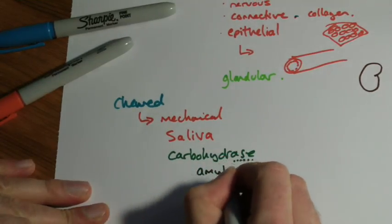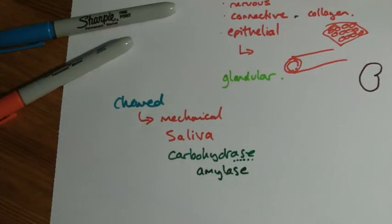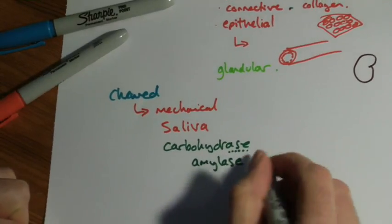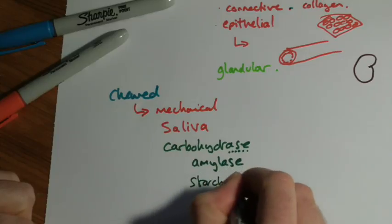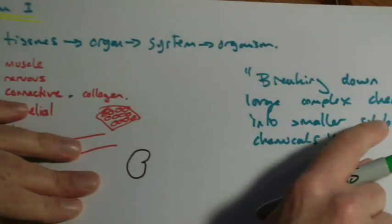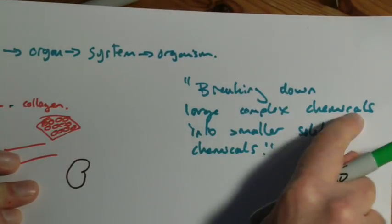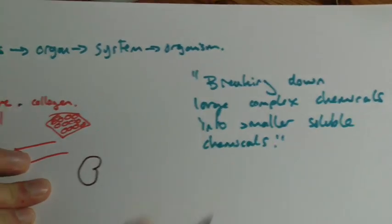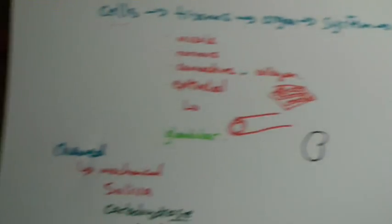Specifically, it's often referred to as amylase. And what amylase breaks down is starch into glucose. So in this case, looking back to this, our complex chemical might be starch. And the smaller soluble chemical would be glucose. So digestion is actually happening in the mouth.